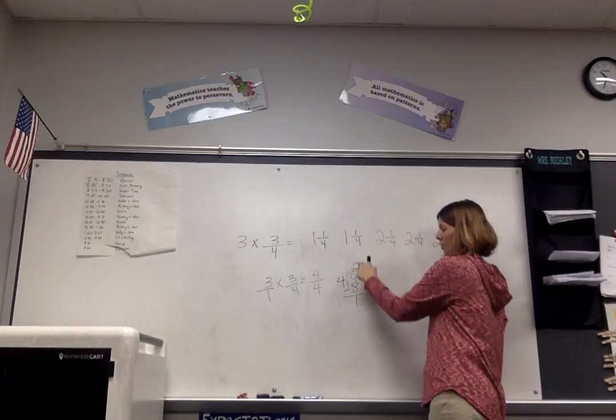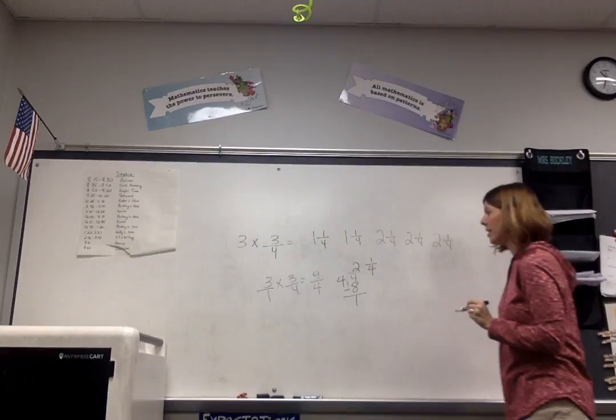And then, so it's two and one-fourths. So two and one is left over, divided into four equal parts, making it two and one-fourths. That is awesome.